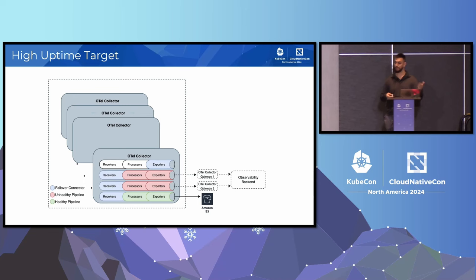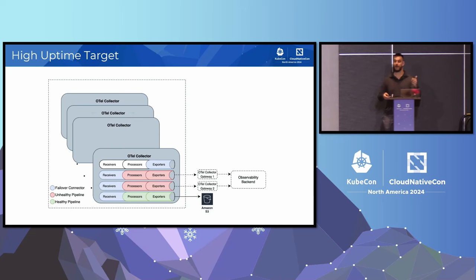Third, a high uptime target. This would be something like AWS S3 or Kinesis, maybe Pub/Sub on GCP, or if you have a well-managed Kafka cluster, that's definitely an option also. The idea is that it might not be the best route for your data to take — it might not be the best in terms of cost or latency — but the data won't be lost. That's the important part.